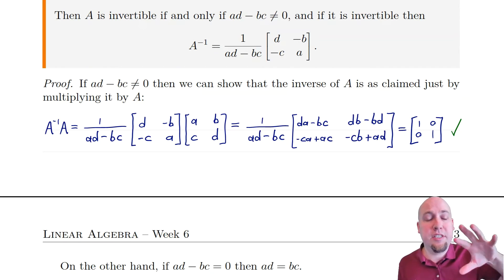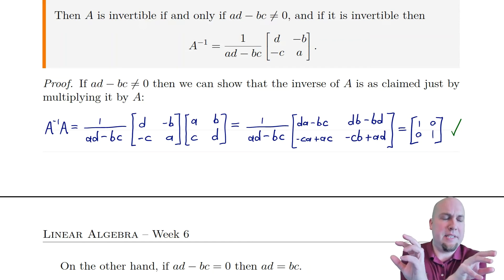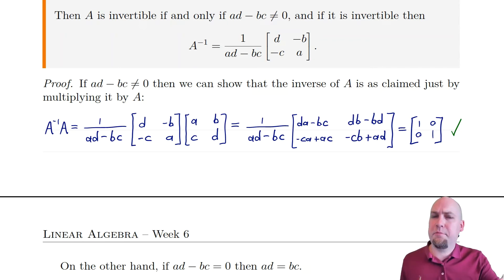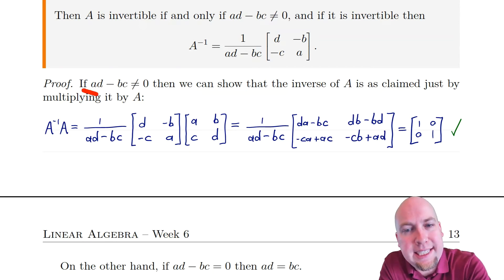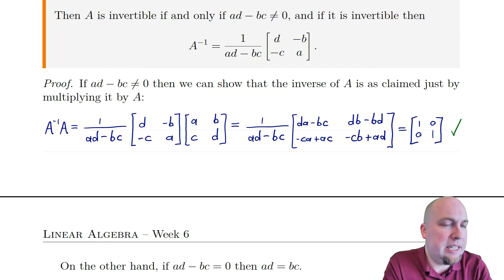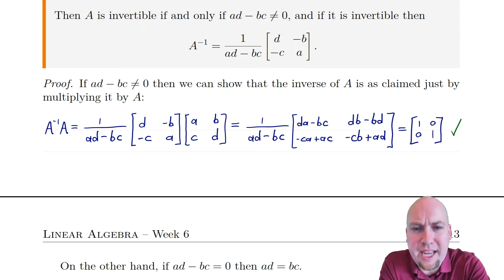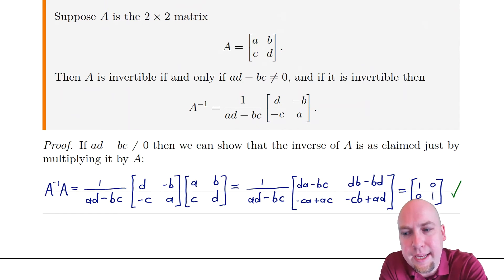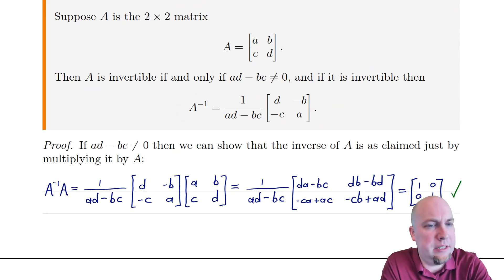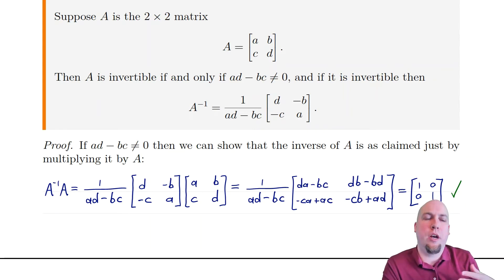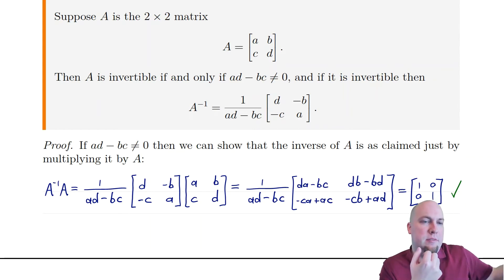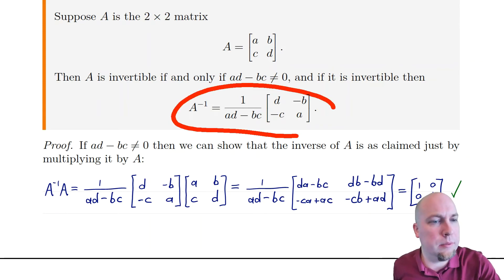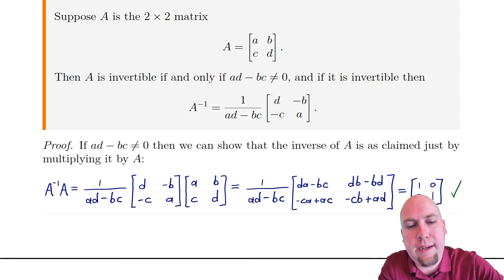By the previous theorem, it's enough to check that one-sided product — we don't have to check A times A inverse as well. That proved half of the theorem: if AD minus BC is not zero, then the matrix is invertible and this is the inverse. But I also have to show that if AD minus BC equals zero, then the matrix is not invertible. Be careful here — it's tempting to just say the formula doesn't work because you can't divide by zero, but that's not a valid proof. We have to show there's no inverse whatsoever, not just that this particular formula fails.